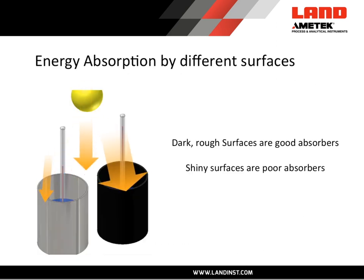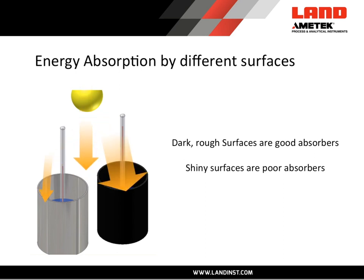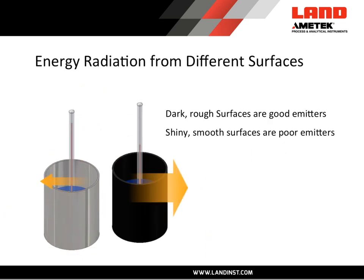Let's show this in another way. We have two objects — one is dark and rough, the other is shiny and smooth. The dark and rough object will absorb radiation very well, whereas the smooth and shiny object doesn't absorb radiation well. The dark and rough object is a good emitter and radiates a lot of its energy. Again, the shiny and smooth object doesn't emit much of its energy. So good absorbers are also good emitters, and poor absorbers are also poor emitters.